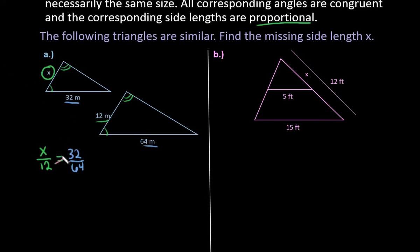So one way that you can solve this is by cross multiplying, and then you would have 64x equals 12 times 32, which ends up being 384, and then I could divide both sides by 64. And I end up with x equals 6, and because the units are meters, I would say that x is 6 meters.